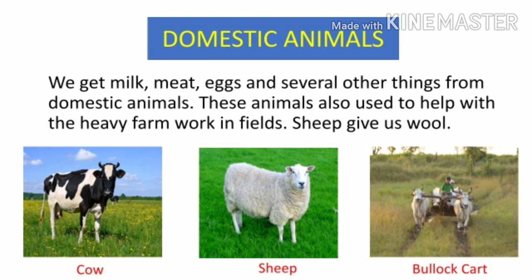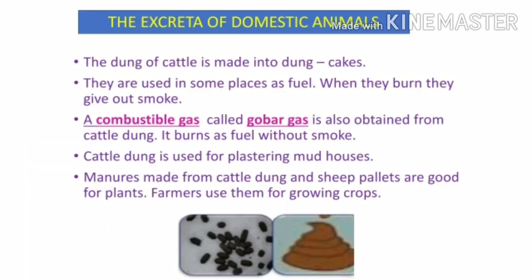The excreta of domestic animals is also useful. The dung of cattle is made into dung cakes, which are used in some places as fuel. When they burn, they give out smoke. A combustible gas called gobar gas is also obtained from cattle dung.